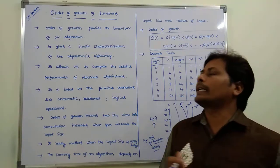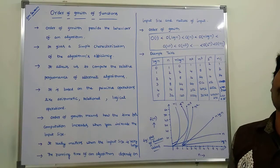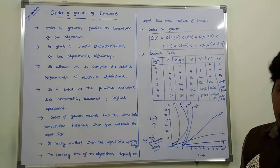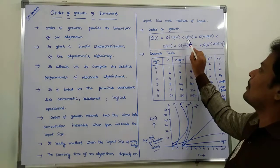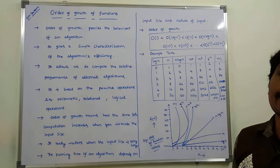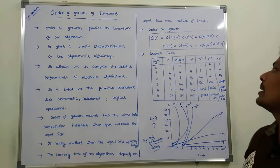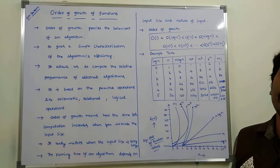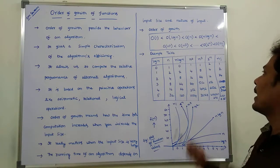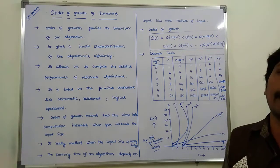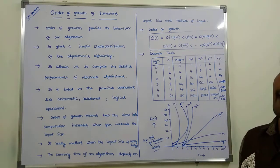Order of growth can be mentioned in this order. First is O(1), which is constant. Next is O(log n), which is logarithmic. Next is O(n), which is linear. Next is O(n log n), which is also logarithmic. Next is O(n²), which is quadratic. Next is O(n³), which is cubic. Next is O(2ⁿ), which is exponential. Next is O(n!), which is factorial.